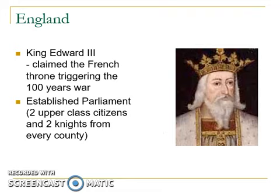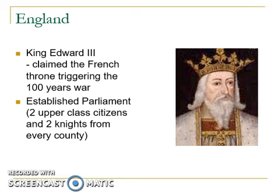King Edward III claimed the French throne, triggering the Hundred Years' War, which we'll talk about in greater detail shortly. He also established rules of parliament, stating that two upper-class citizens and two knights from every county would be part of it. Parliament began under Edward I when he needed to raise taxes for war in France. King Edward III then established the two upper-class citizens and two knights from every county as part of parliament.